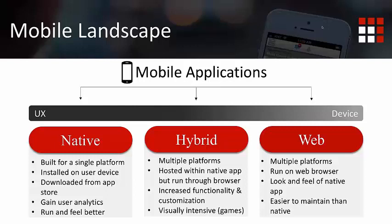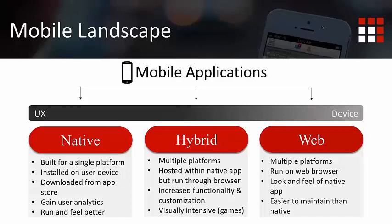Native applications only work on those specific devices. You can buy them in the respective app stores — on iOS devices through the Apple Store, on Android through the Google Play Store, and Microsoft has their own store for Windows phones. These applications work only on their respective platforms, but they leverage the best capabilities of those devices and provide a very rich user experience. They give you the capability to leverage the best features that devices come with.